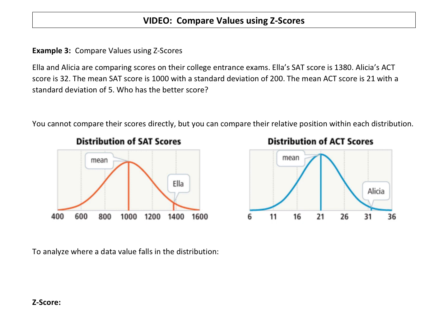You can see where Ella fell. Ella's right here at 1380, so her score is above the mean. Nice job, Ella. But how does that compare to Alicia's ACT score? The ACT score has a mean of 21, so clearly Alicia did better than the mean with a standard deviation of 5. You can see they're counting by fives.